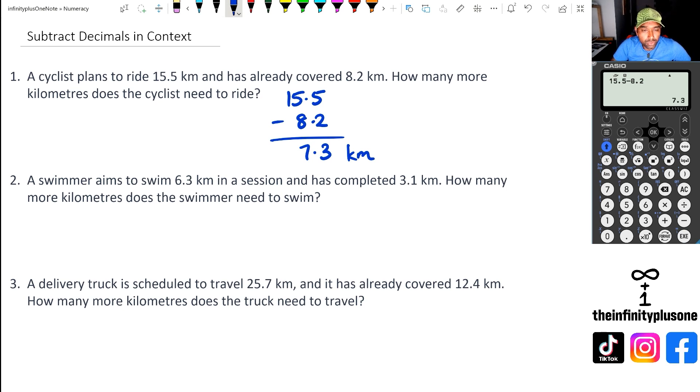Moving to question number two, we've got a swimmer who aims to swim 6.3 km in a session and has completed 3.1 km. And then subtracting this, we've got 3 take away 1 is 2, decimal point, 6 take away 3 is 3. So we've got another 3.2 kilometers for the swimmer to swim.